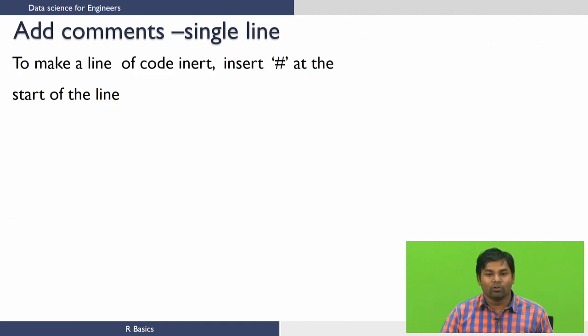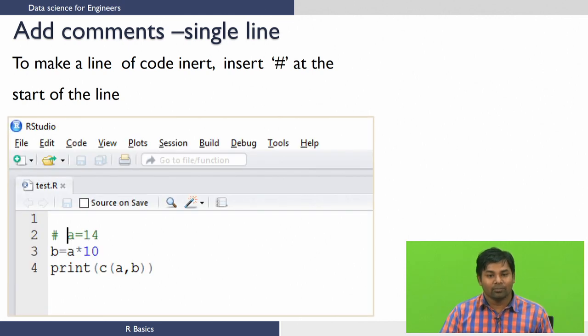Comments can also be used to make certain lines of code inert. You can do that by inserting a hash key at the beginning of the line. Like here you can see, I want to comment this line which says a equals 14. If I wish to do so, I can comment it by keeping a hash key in front of it.